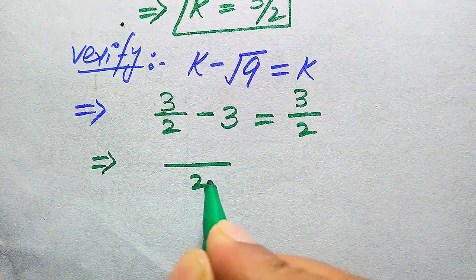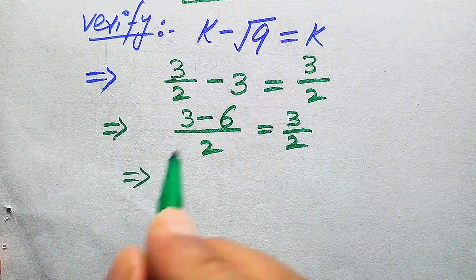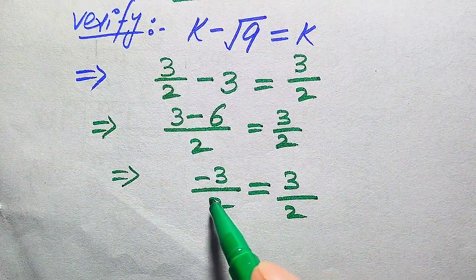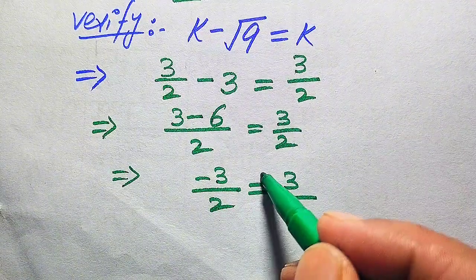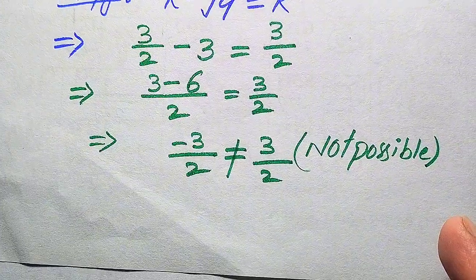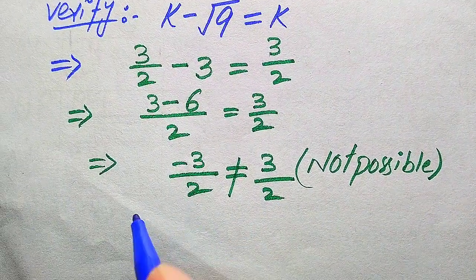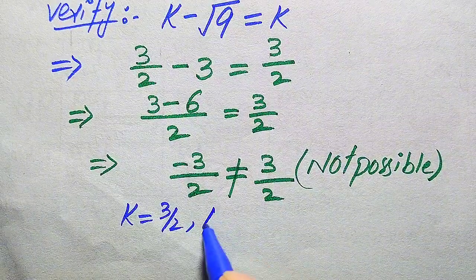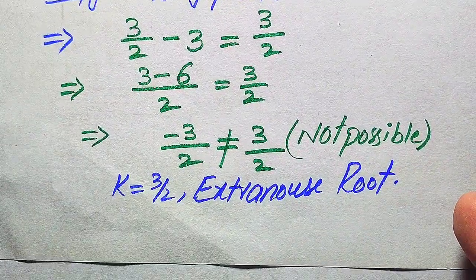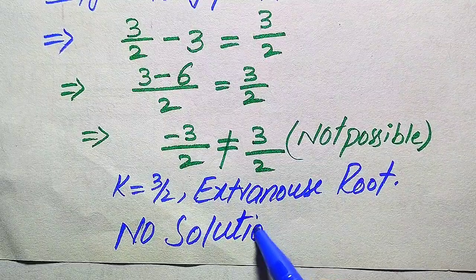Taking the LCM of the left-hand side with denominator 2, it becomes (3 minus 6)/2 equals 3/2, which gives minus 3/2 equals 3/2. Clearly, minus 3/2 does not equal plus 3/2, so this is not possible. Therefore, k = 3/2 does not satisfy the given equation — it is an extraneous root, and this equation has no solution.